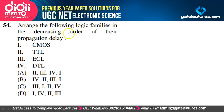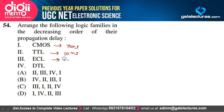Logic families in decreasing order of propagation delay: CMOS (~70 ns), DTL (~30 ns), TTL (~10 ns), ECL (~1–2 ns). Option D is correct.